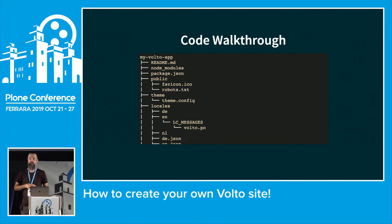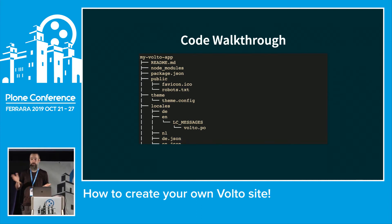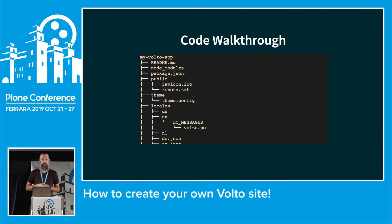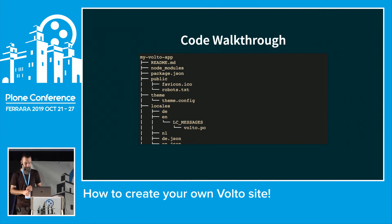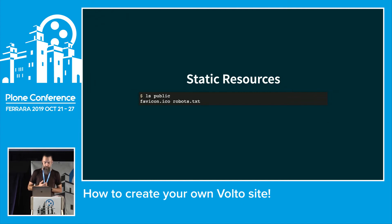The routes.js file contains all routes available in your application. They are defined in Volto as well, so we import them from Volto by default. If you want to extend them, add a specific route for your view or add-on product, you can do so in this file.